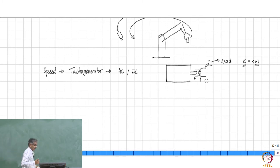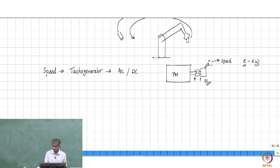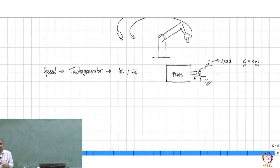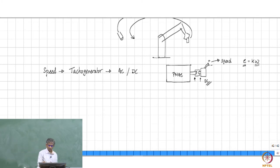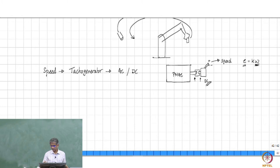The difficulty with a DC tachogenerator is that it is still a DC machine, so you have to replace the brushes and service it even if the main motor is an AC machine. Though this is a very good mechanism to sense speed because you get instantaneous velocity in either direction, there is sometimes a hesitation to use it for speed sensing.